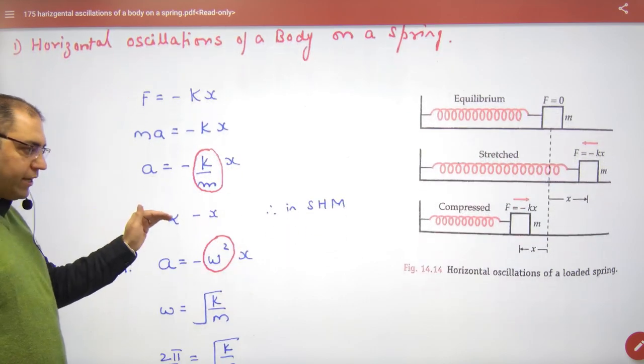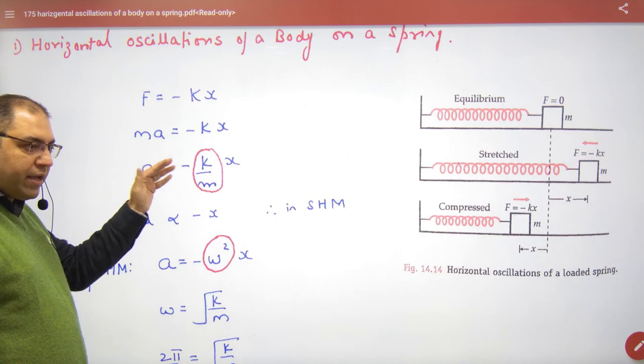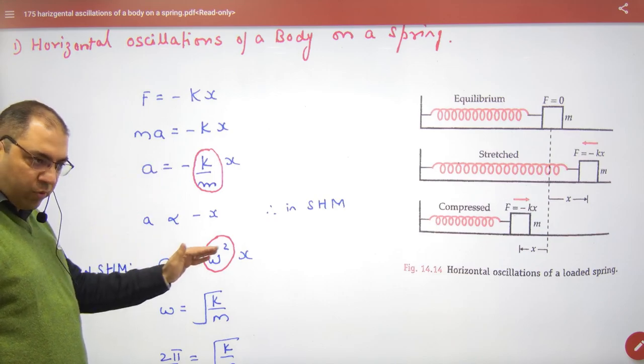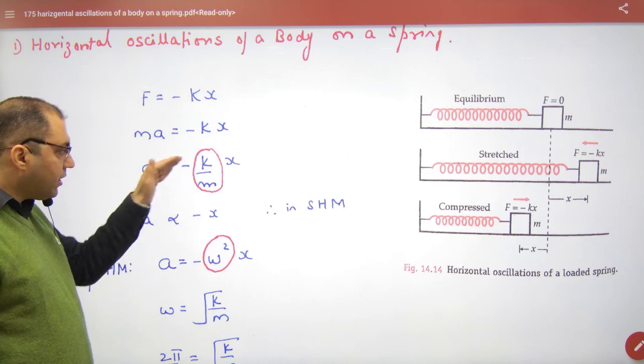So SHM's condition has come. a = -ω²x. Compare them.